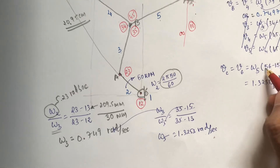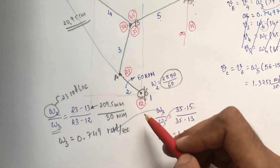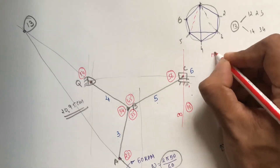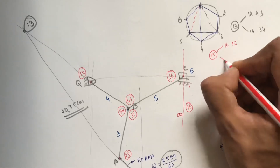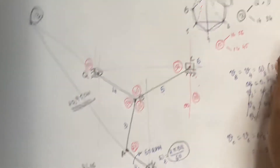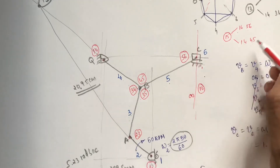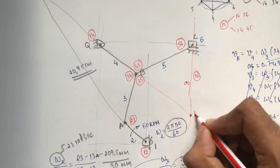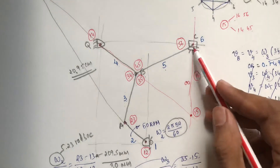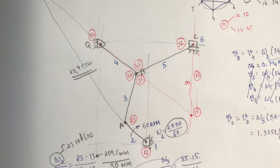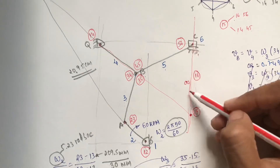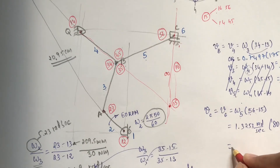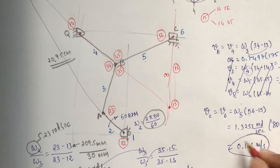We don't have IC 1-5, so find it using paths: 1-6 to 5-6 (which is a vertical line) and 1-4 to 4-5. Extend these two paths — their intersection gives IC 1-5. Measure distance from IC 5-6 to IC 1-5: it is 8.8 cm = 80 mm (at scale). So V_C = 1.3253 × 0.080 = 0.106 m/s.